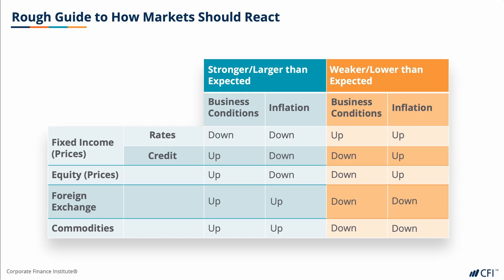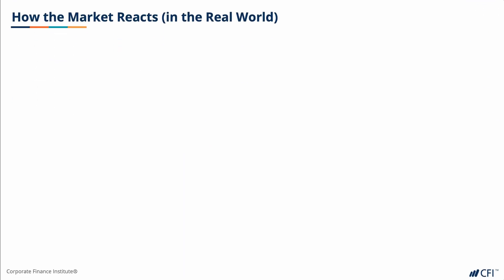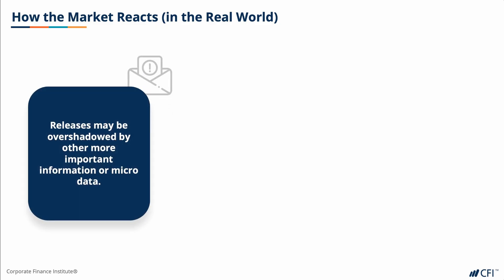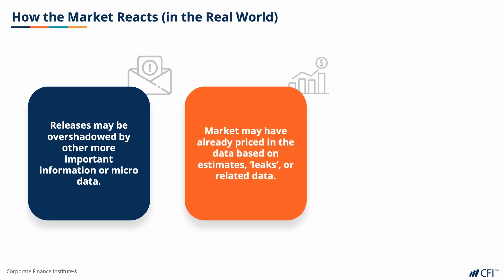The magnitude of the market's reaction to surprises may also differ. Here are three scenarios to demonstrate how markets may not react as expected in the real world. Firstly, releases may be overshadowed by other more important news, such as war, disease, or other conflicts, or they could also be overshadowed by more micro data, such as an individual company's earnings. The market may also have priced-in data based on estimates, leaks, or related data.